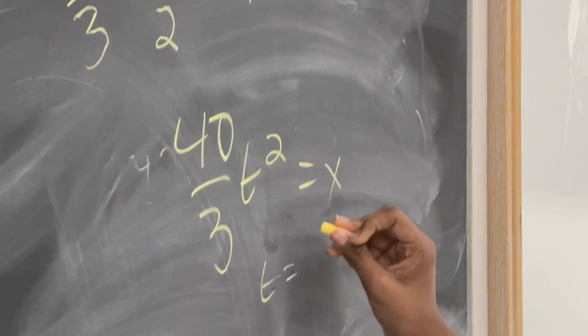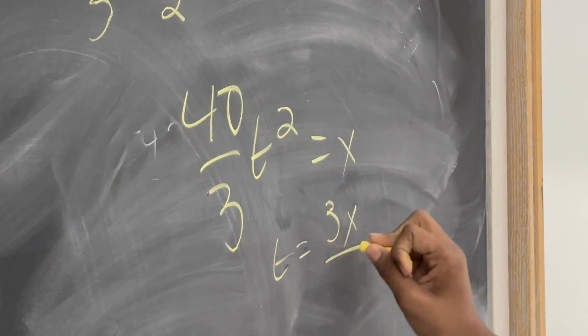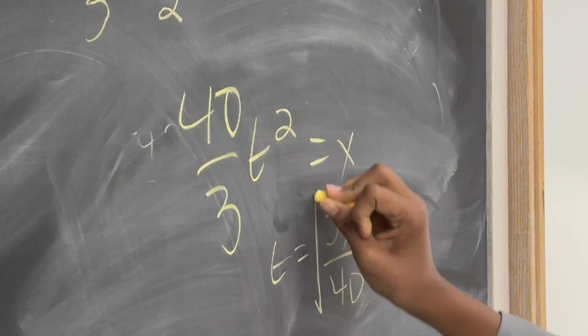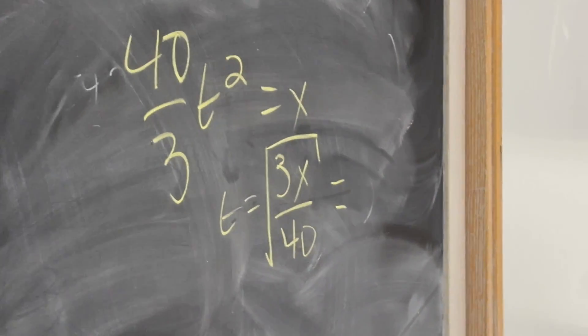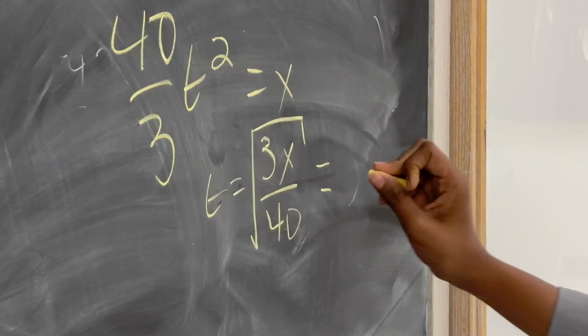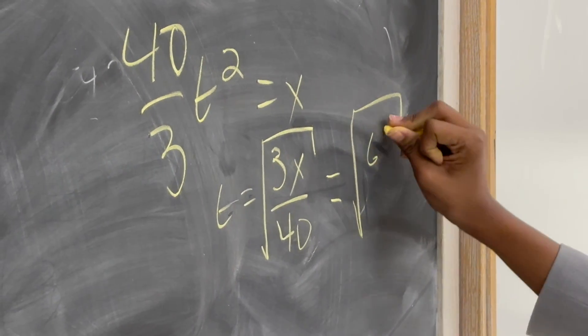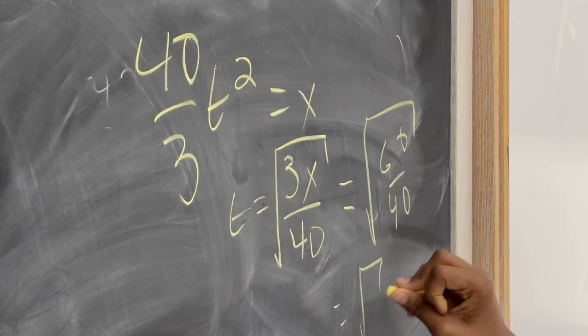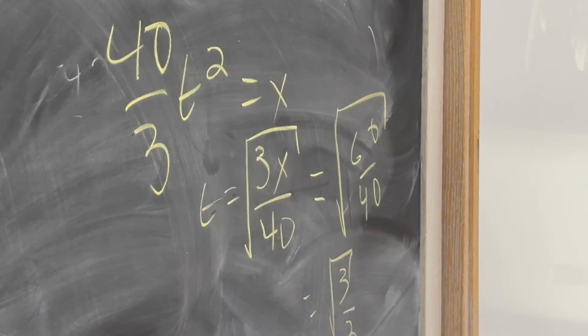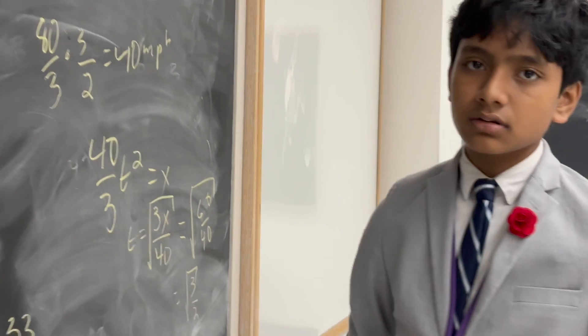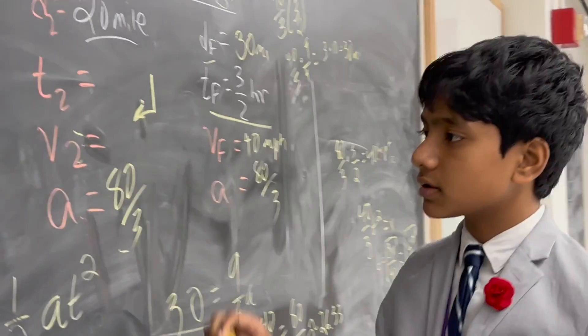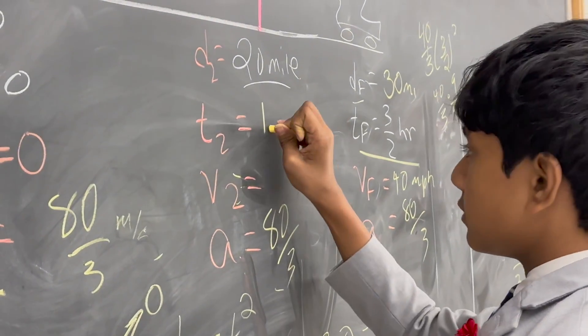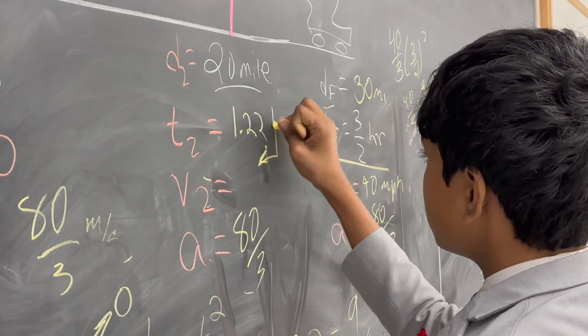So, t is equal to 3x over 40, all square rooted. So, now, let's plug in. We know x at that point is 20 miles. So, we get the square root of 60 over 40 or the square root of 3 over 2. Does anyone know what that is? 1 times 2. Okay. Good. So, now, we have 1.22 hours.